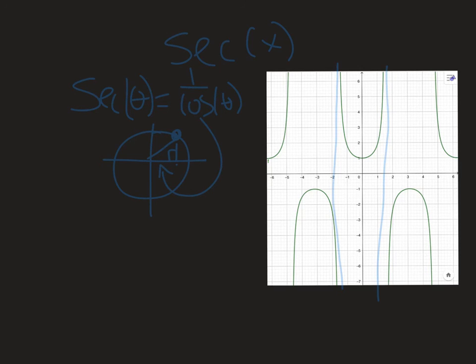You'll notice that the period of secant, to the point where it starts repeating itself, is more than tangent. It's 360 degrees. Likewise, we'll have issues whenever this x is 0. That's where we'll have our vertical asymptotes. That'll happen at 90 degrees and negative 90 degrees, and then likewise 270 degrees, so on and so forth.